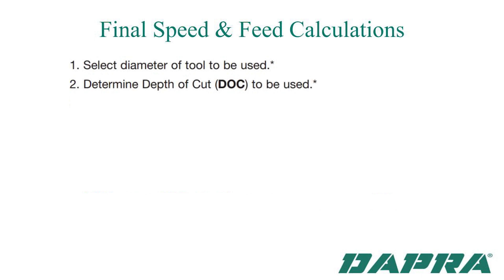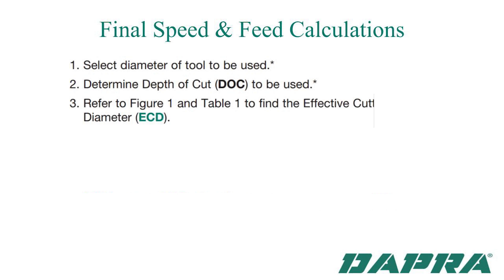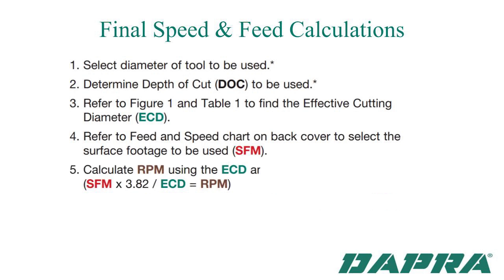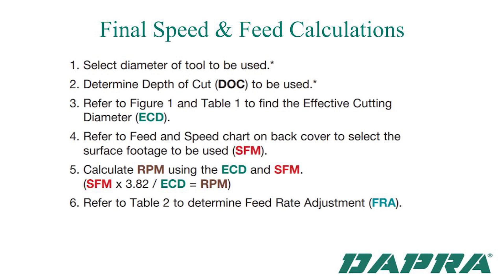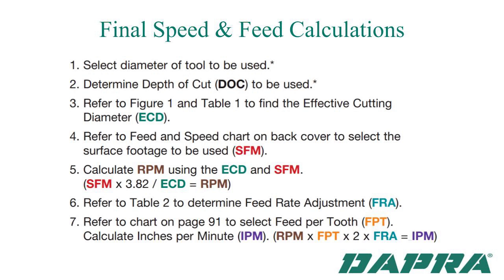Here's a rundown of the full calculation process. Identify your cutting tool diameter and determine the depth of cut using the guidelines described. Find the effective cutting diameter using the ECD chart. Using the recommended SFM from your cutting tool catalog, calculate the RPM by multiplying the SFM times 3.82, then divide by the ECD — not by the actual tool diameter. Then refer to the feed rate adjustment chart and multiply the desired feed per tooth times the feed rate multiplier. Finally, multiply the RPM times the adjusted feed rate times the number of teeth in your cutter to get a more optimized feed rate for your ball nose cutting tool.